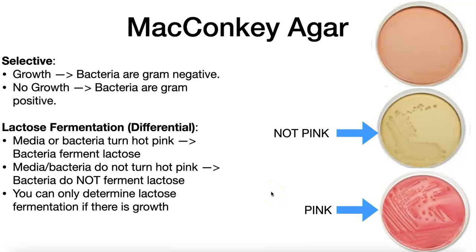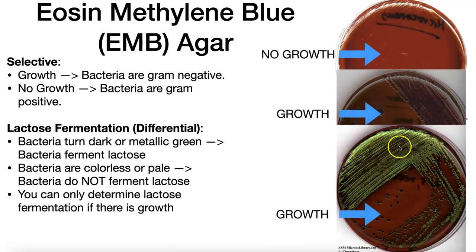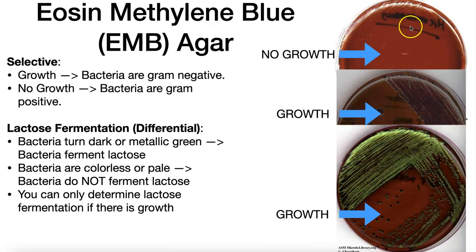Those are the two things to look at for the MacConkey agar. The eosine methylene blue EMB plate is also selective in the exact same way as the MacConkey — gram-negative bacteria should grow on this plate while gram-positive bacteria will not. There are three different bacteria shown. On the top plate there's no growth, and on the bottom two plates there is bacteria growing. The top plate had a gram-positive bacteria streaked onto it, which failed to grow due to inhibitors, whereas the gram-negative bacteria on the bottom two plates were able to grow.